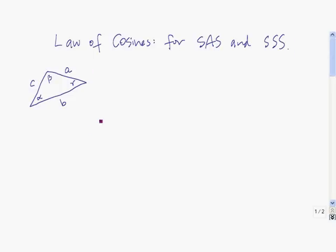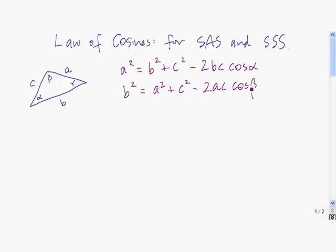Suppose we have this triangle. The law of cosines says that a squared equals b squared plus c squared minus 2bc times the cosine of alpha. Similarly, b squared equals a squared plus c squared minus 2ac cosine of beta. And finally, c squared equals a squared plus b squared minus 2ab times the cosine of gamma.